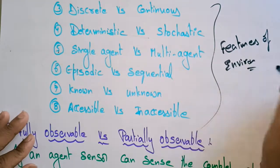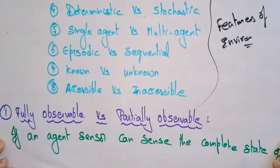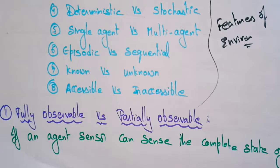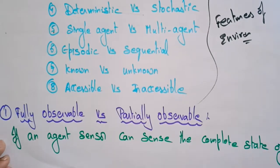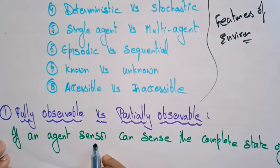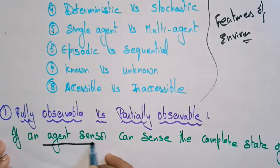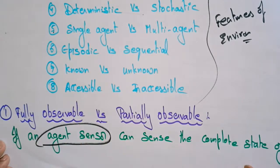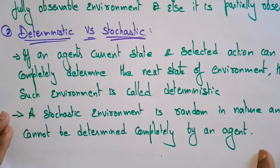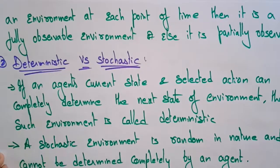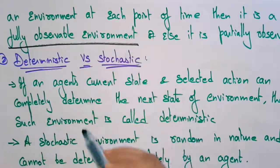Let us discuss one by one. First: fully observable versus partially observable. If an agent's sensor can sense the complete state of an environment at each point of time, then it is called a fully observable environment.